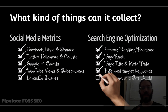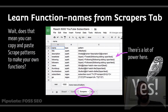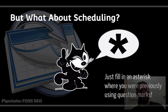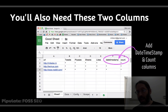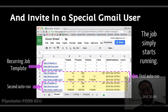You can grab data points off the page, guess what keywords the page is targeting, and do site audits. As for what functions are available and what data you can scrape — look at the scrapers tab, there's a lot of power in there and you can make your own. What about running a job over and over? Replace the question mark with an asterisk, add a couple of columns for date, timestamp, and count, invite a particular Gmail, and it's scheduled. That's it.